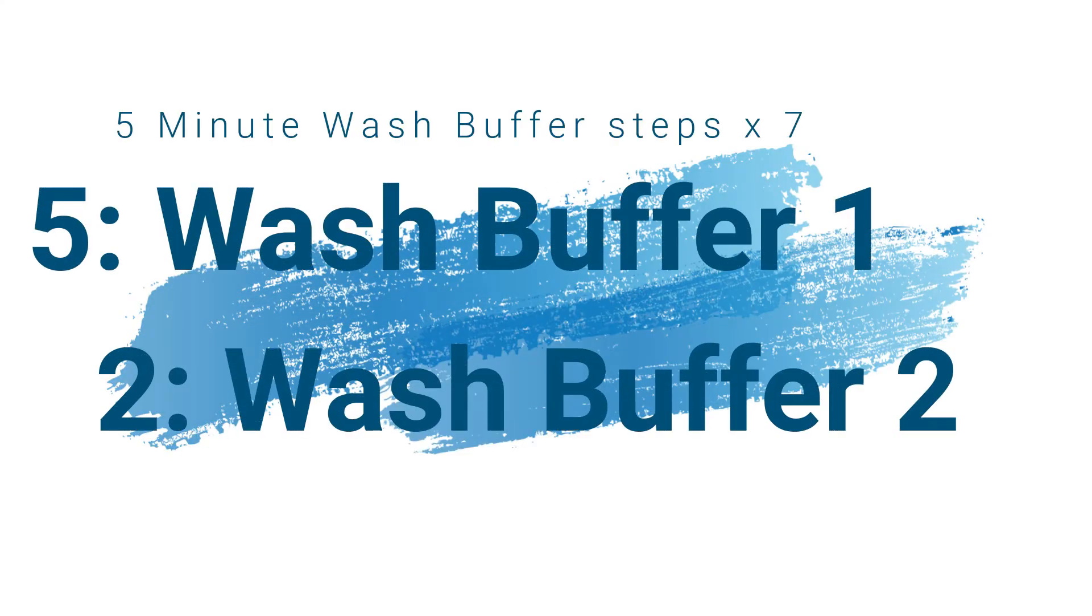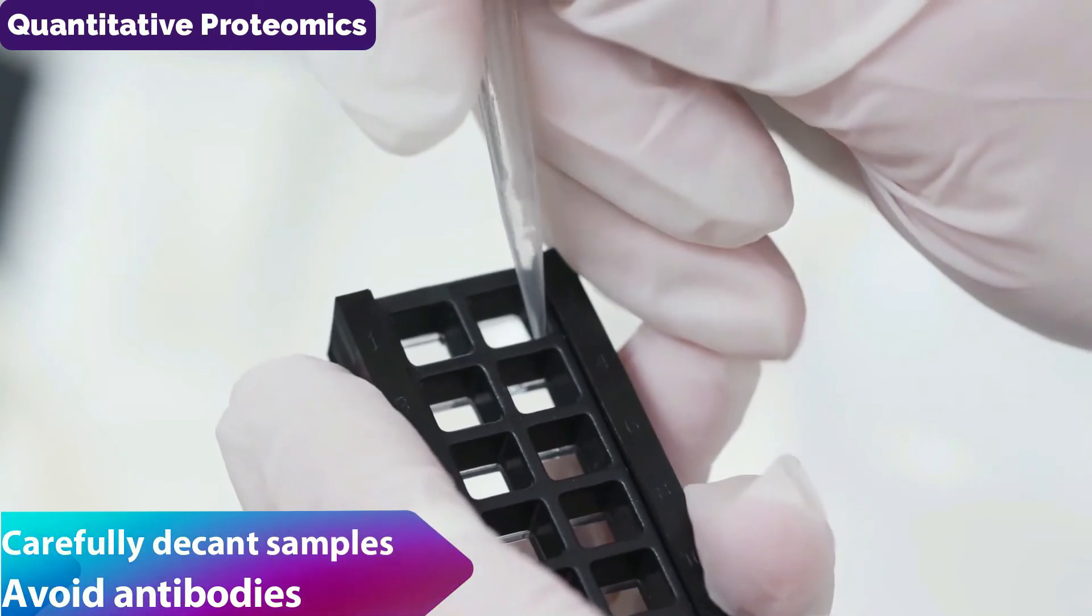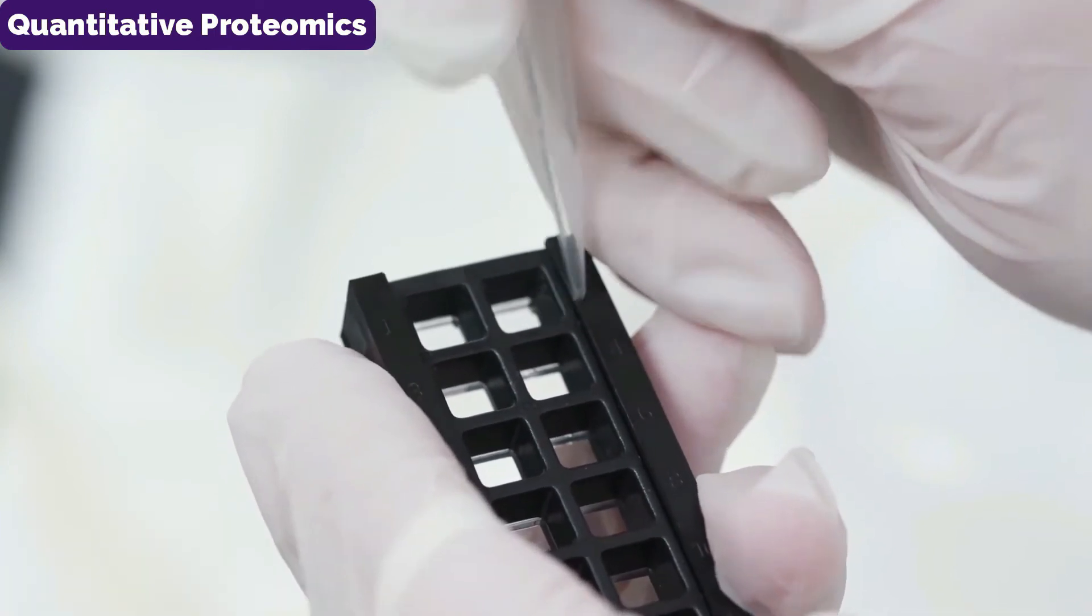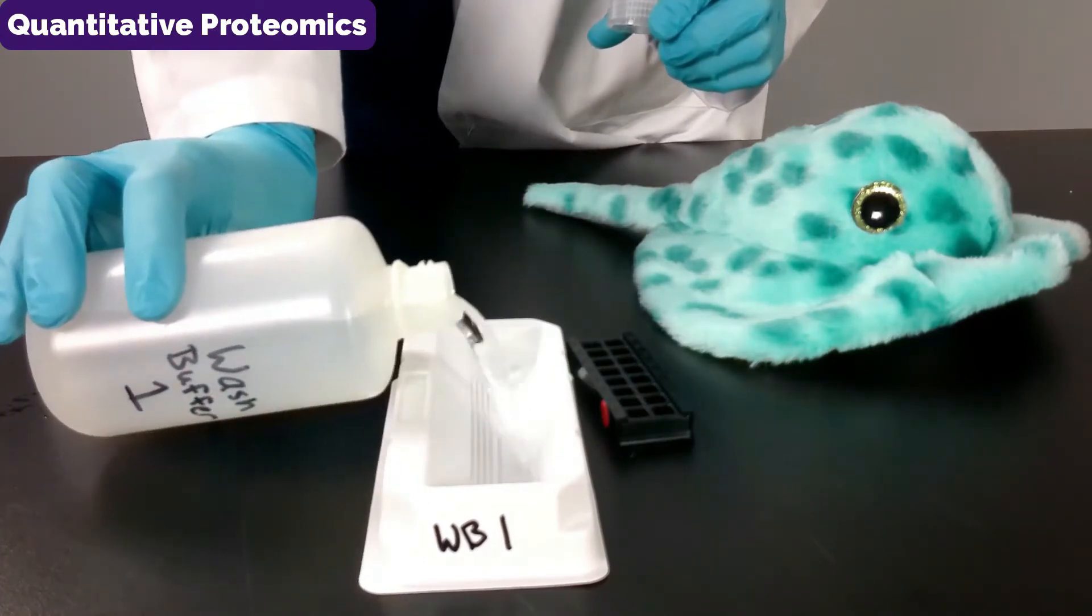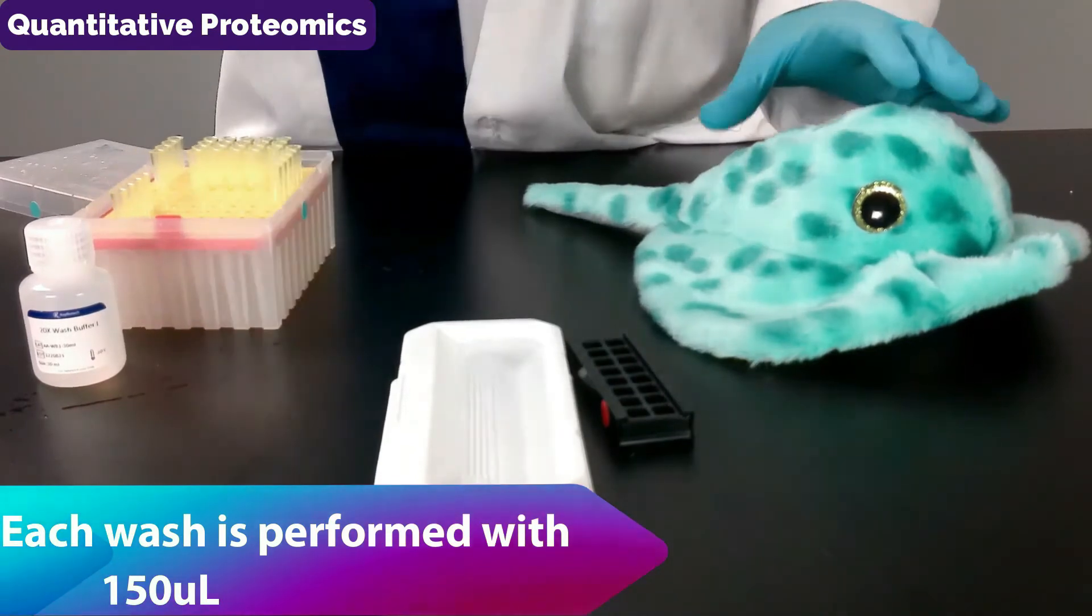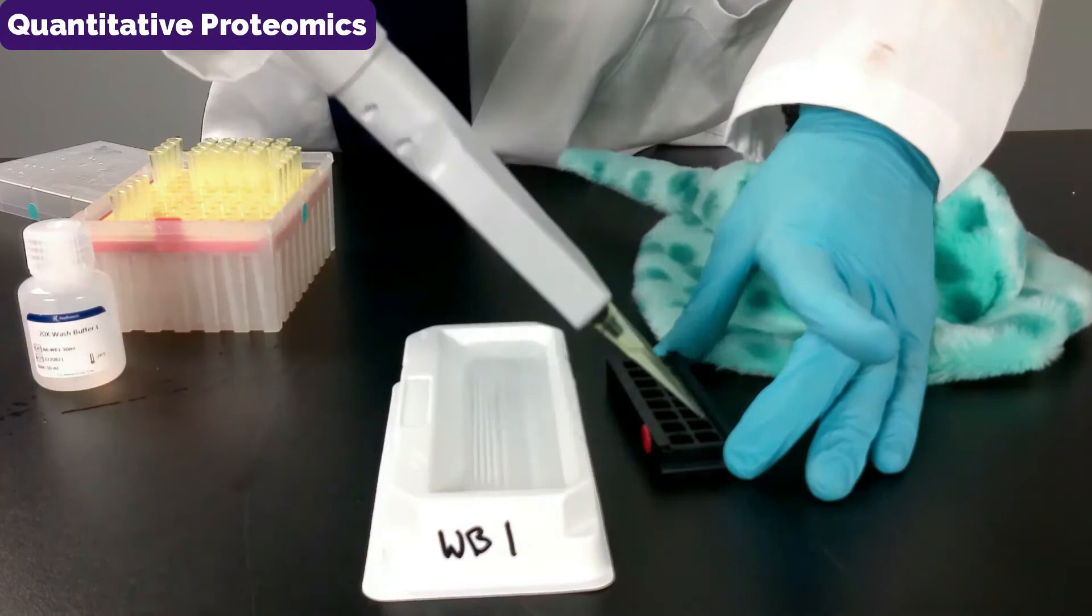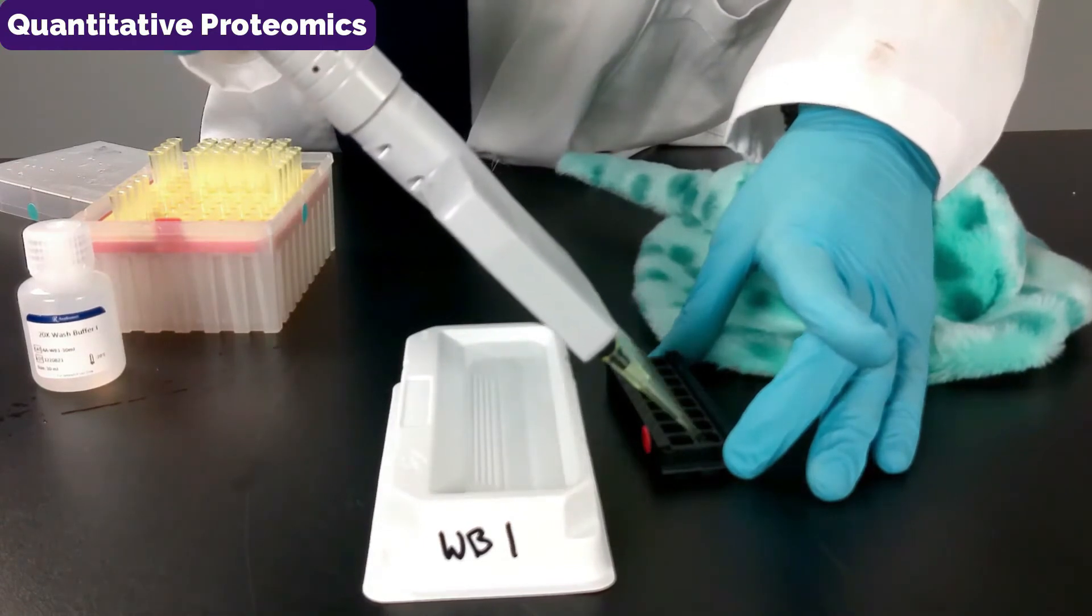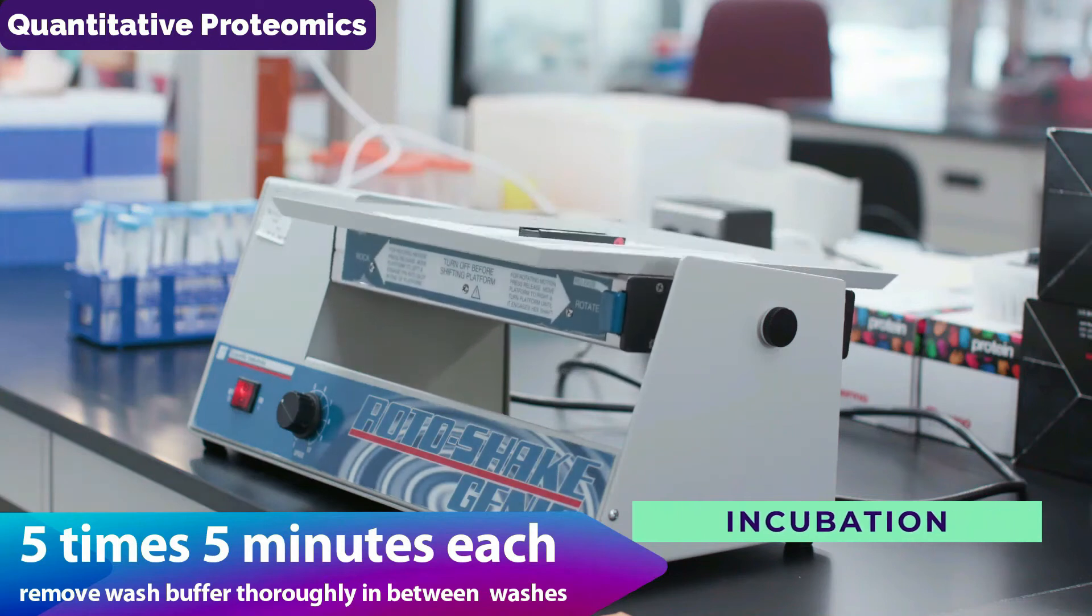In between each incubation, you will do seven wash steps. First, carefully decant the sample diluent. Add wash buffer to the tray and then pipette with the multi-channel 150 microliters onto the slide. You'll then incubate for five minutes and repeat this process five times. Remember it is important to remove the wash buffer thoroughly in between washes.